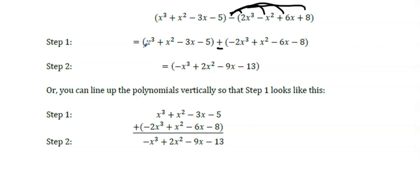By doing this, now they can just look at like terms. They have x³ + (-2x³), which gave them -x³. They had a positive x² + x², giving them 2x². -3x + (-6x) makes a -9x. And then -5 + (-8) is -13.